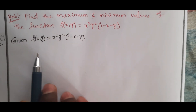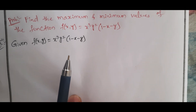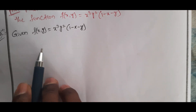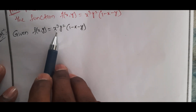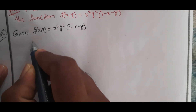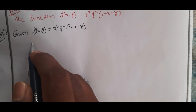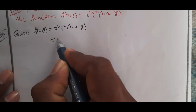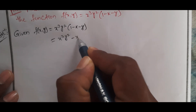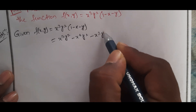This is a very important question. Given f(x, y) = x³y²(1 - x - y). This involves finding the maximum and minimum values using first-order and second-order partial derivatives.